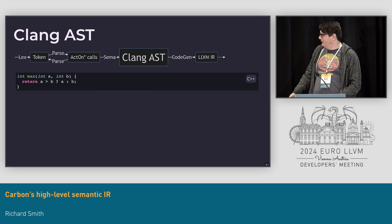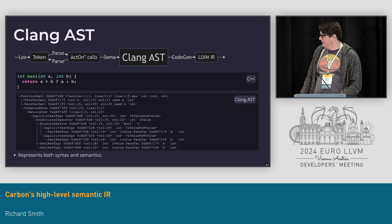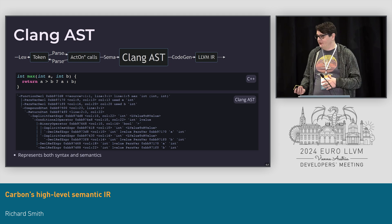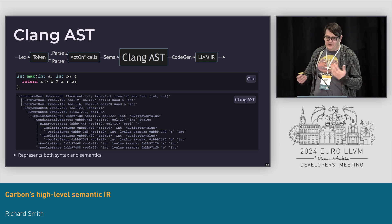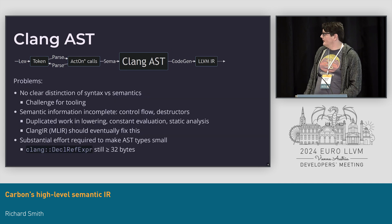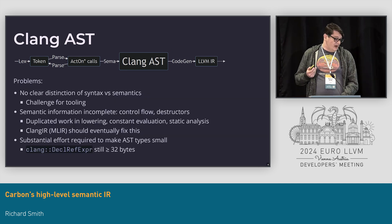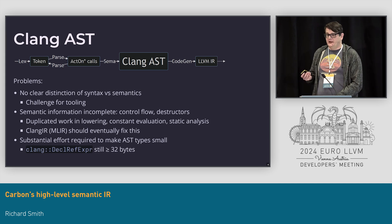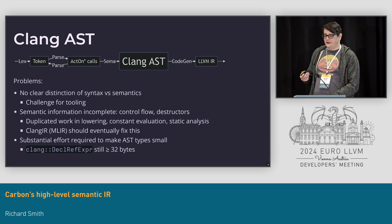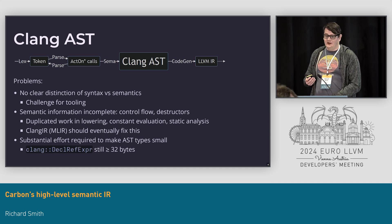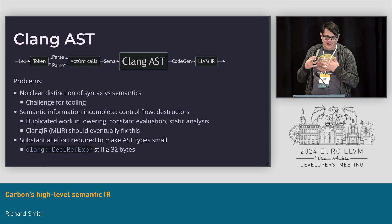For a simple max function, we produce a tree that looks like this. This contains syntactic information and semantic information, and it's a fairly traditional tree structure. There are some problems with this representation that we've found over time. One of them is because it doesn't have a clear distinction between syntax and semantics, certain things that you might do in tooling scenarios, such as wanting to know about the syntax of the program, become quite difficult, and the syntax and semantic information kind of gets mingled together.